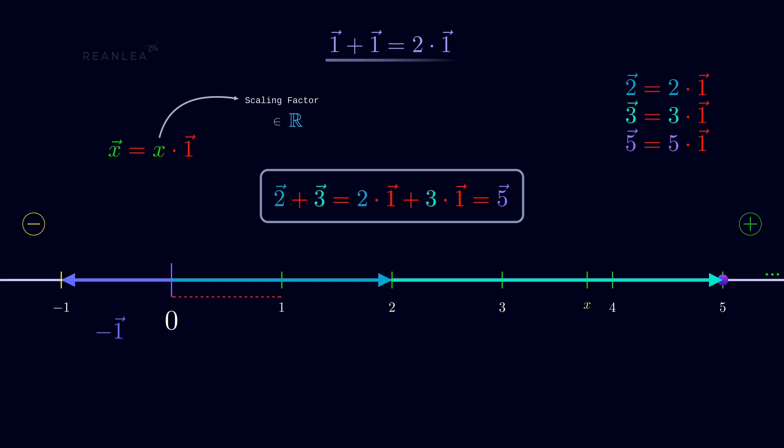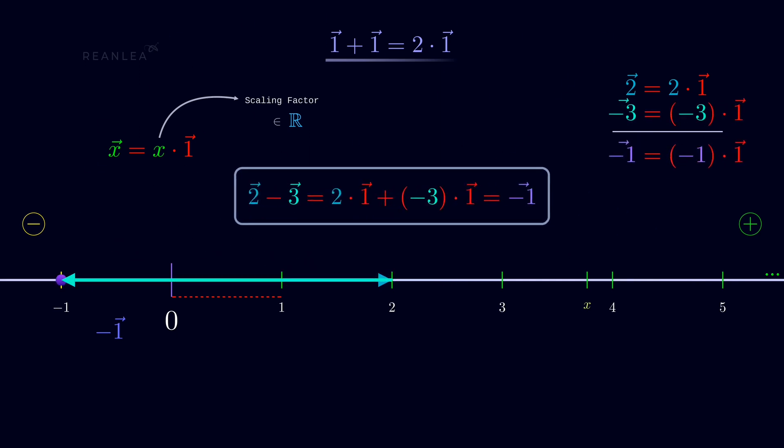If we change the direction of vector 3 to its exact opposite, it becomes vector minus 3. The addition of vector 2 and vector minus 3 can be visualized by shifting a dot 2 units on the positive side and then 3 units on the negative side, which stops at the static position minus 1, representing the minus 1 vector. That's how 2 minus 3 equals minus 1.